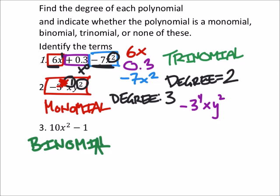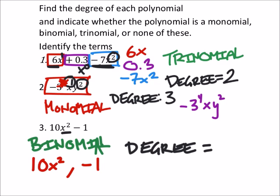Three is a binomial because we only have two terms. There's our two terms. And finally what is the degree? Well we only have one variable x and its exponent is two so it is a degree two.